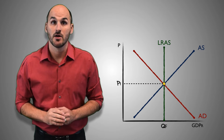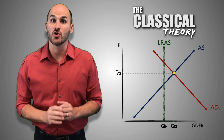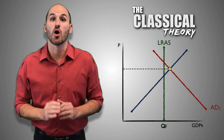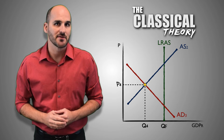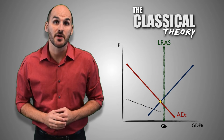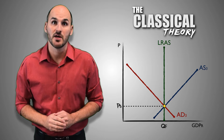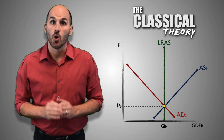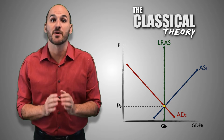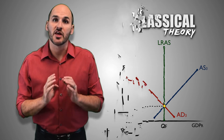Ideally, flexible wages and prices will naturally close GDP gaps and return the economy to long-run equilibrium. But what if that doesn't happen? If excessive unemployment or excessive inflation persists for some time, it's an indicator that wages and prices are sticky, or the economy may be experiencing a wage-price spiral. Without government intervention, the economy may be headed for serious trouble.